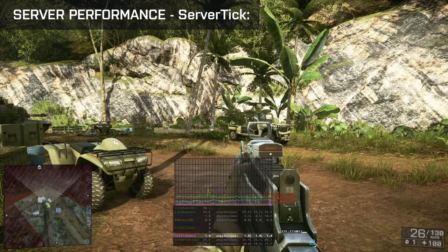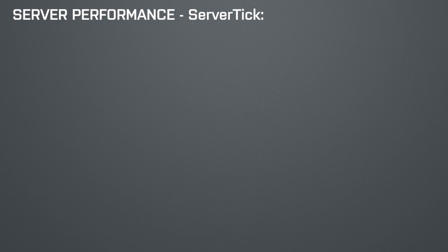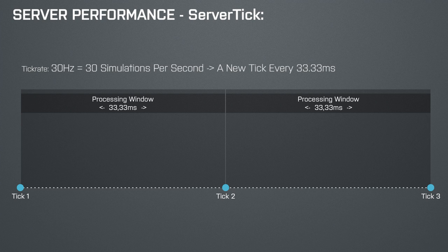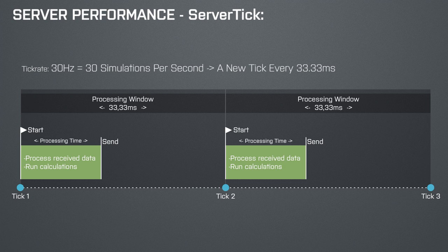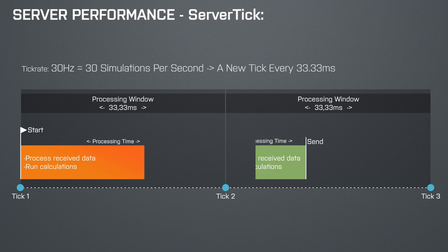The next one is very interesting: the server tick. It tells you how much time the server needs to process a single tick. When the game runs at 30Hz, it does 30 simulations per second — about 33ms apart. When it is time for a new tick, the server begins to process the data it received and runs its calculations. Once finished, it sends the results to the clients and then sleeps until the next tick. The faster the server can finish a tick, the earlier clients get a response and the lower the delay between players. The longer it needs, the bigger the lag. When the server is not able to finish a tick inside the timeframe defined by the tick rate, the game will run into massive trouble.